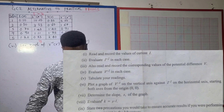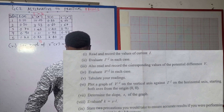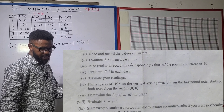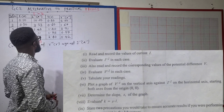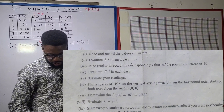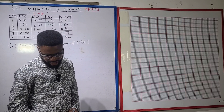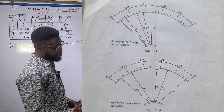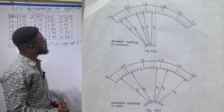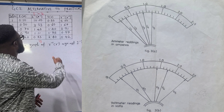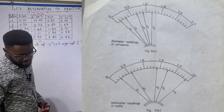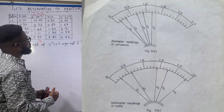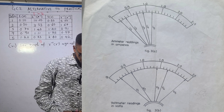In the next part, we were told to read and record the corresponding values of the potential difference — basically the voltage. Looking at figure 3b, what we have is: 0.20 volts, 0.60 volts, 1.40 volts, 1.75 volts, and 2.40 volts.